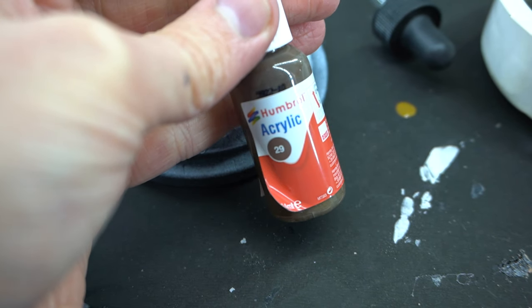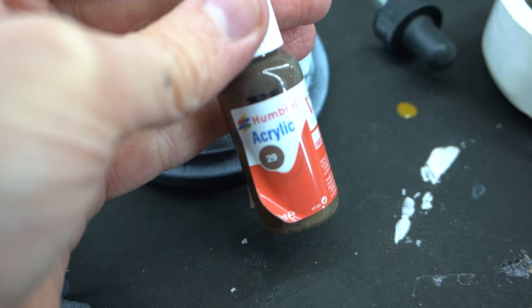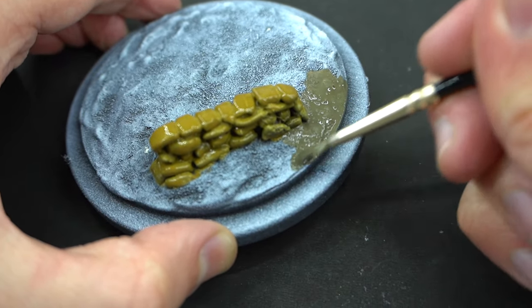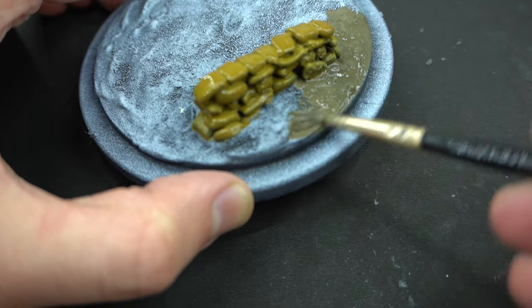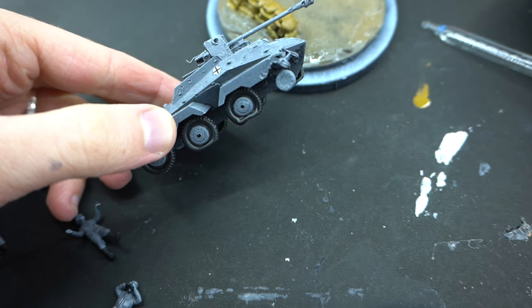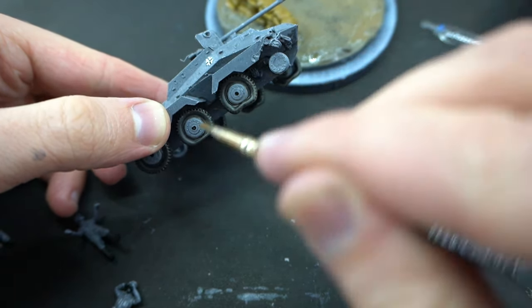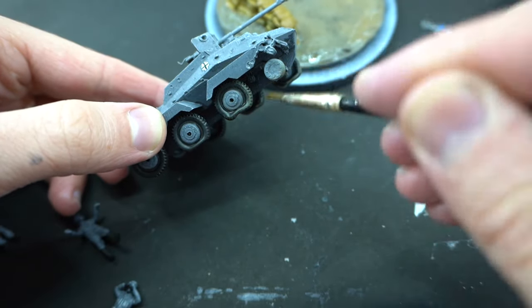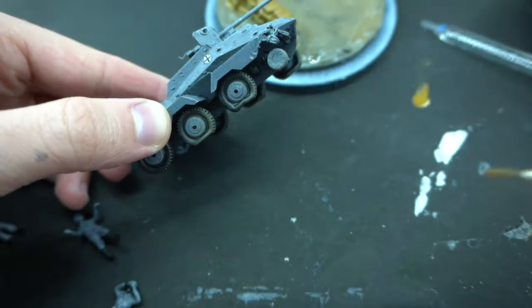Humbrol 29, which is a dark earth acrylic, was then painted over the entire diorama base to try and give that mud a muddy colour. This was then dry brushed onto the lower sides of the armoured car to try and give it the effect that it's been in the same environment.